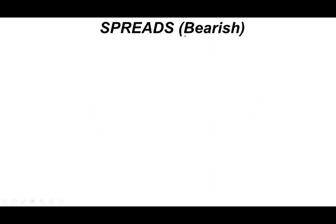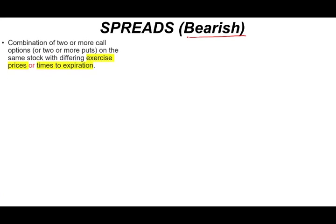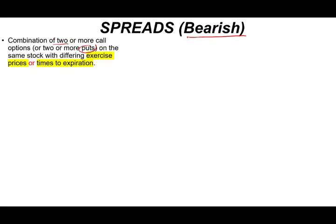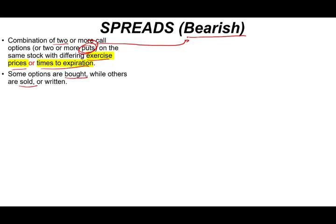We're going to look at a bearish spread. It means we are pessimistic about the stock. We think the stock is going to go down. We can basically short the stock but that's pretty dangerous. So what do we do? We can do a spread. What is a spread of puts? We're going to be dealing with puts on the same stock with differing exercise prices or times to expiration. Simply put you are going to buy and sell a put in this situation. Some options are bought while others are sold and specifically we're dealing with puts because we are dealing with a bearish spread here.